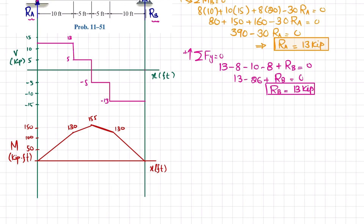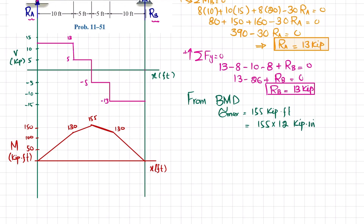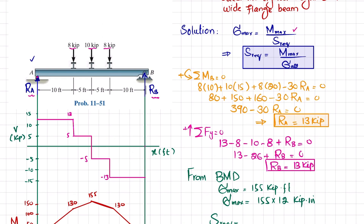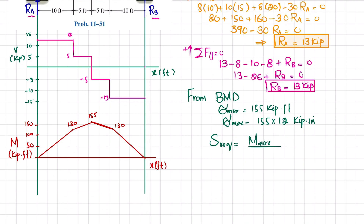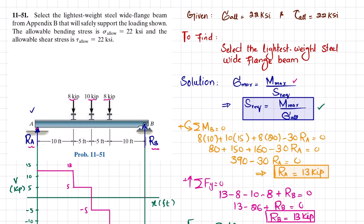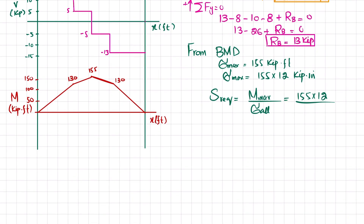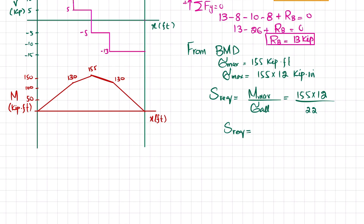From the bending moment diagram, the maximum bending moment is 155 kip-ft = 155 × 12 = 1860 kip-in. The required section modulus is: S = M_max / σ_allow = 1860 / 22 = 84.55 in³.